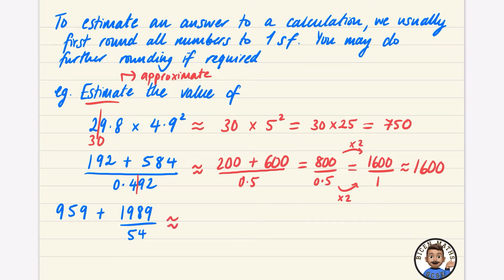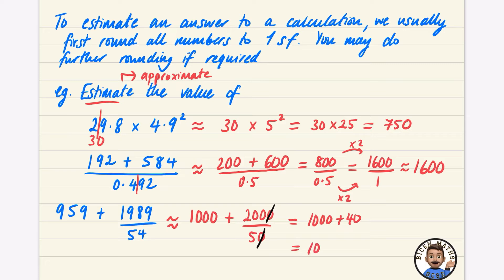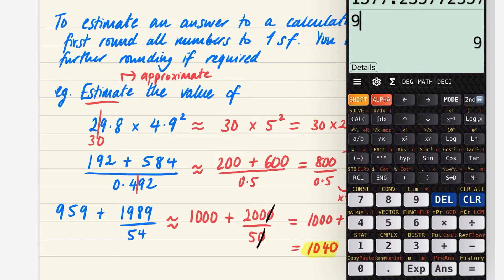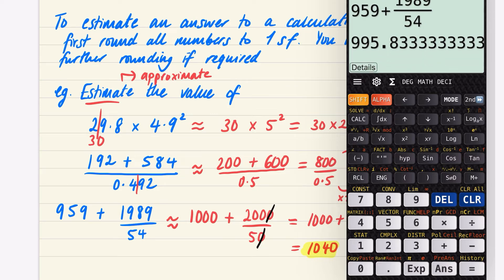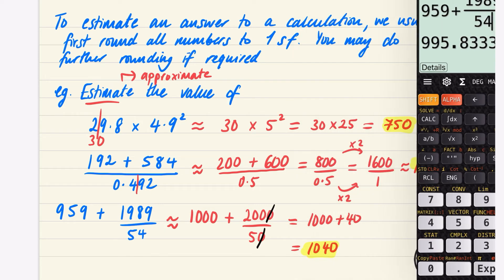For 959 + 1989 ÷ 54: 959 is closer to 1,000, 1989 is closer to 2,000, and the denominator rounds to 50. To simplify, divide top and bottom by 10: you just need 200 ÷ 5 = 40. So the estimate is 1,000 + 40 = 1,040. The real answer is 995.83, so our approximation of 1,040 is reasonably close — maybe not as tight as the others but roughly the right size.